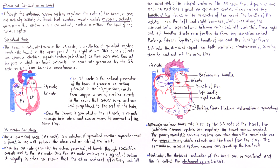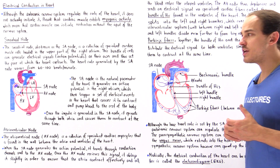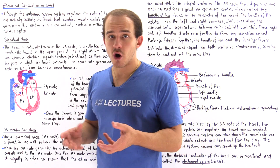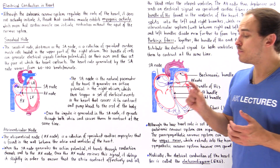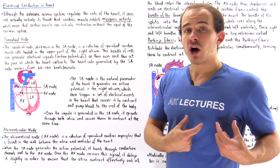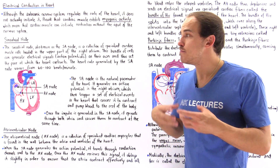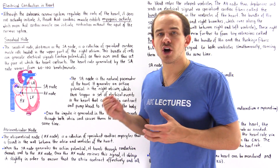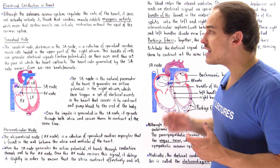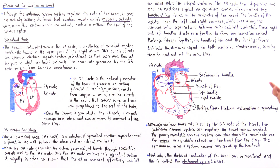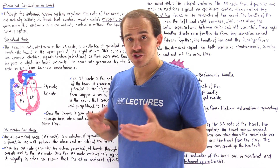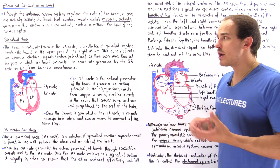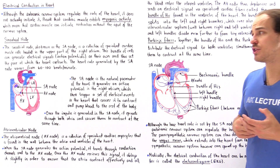Medically, the electrical conduction of the heart can be monitored using an electrocardiogram. Six electrodes are placed around the heart to monitor the voltage — the electrical signal — generated by the heart. By studying this electrical signal, doctors can determine whether or not some type of condition exists within the heart.